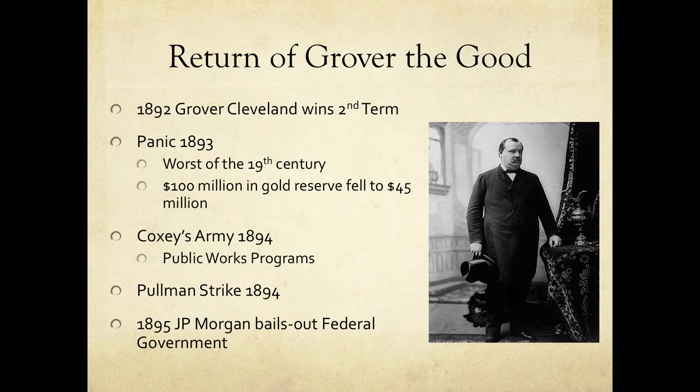Then the worst economic panic of the entire 19th century hit. We'd had several panics before: 1819, 1837 (caused largely by Andrew Jackson destroying the Bank of the United States), a mild one in 1857, and the 1873 panic — the Crime of 73. But now came the Panic of 1893. The U.S. gold reserve fell from $100 million to just $45 million, and it looked like the United States government might actually go bankrupt.